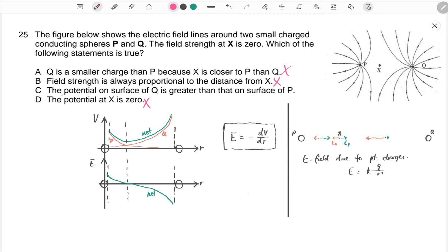And C is a consequence of charge Q having greater charge compared to charge P, so C is correct.